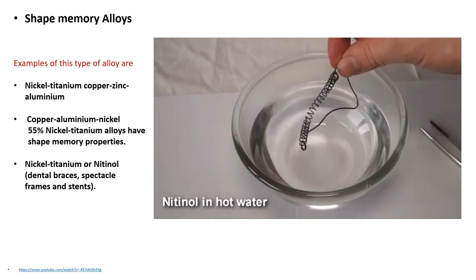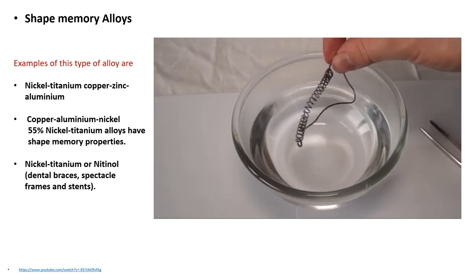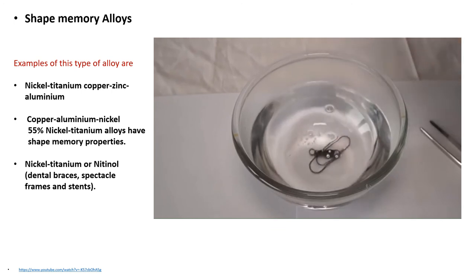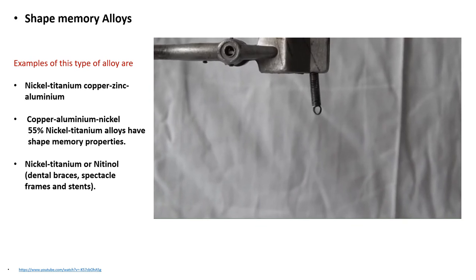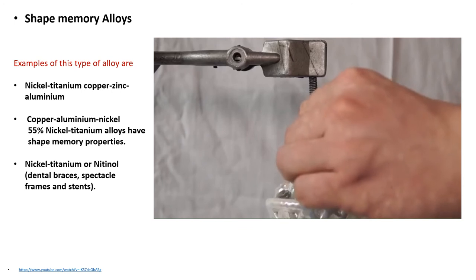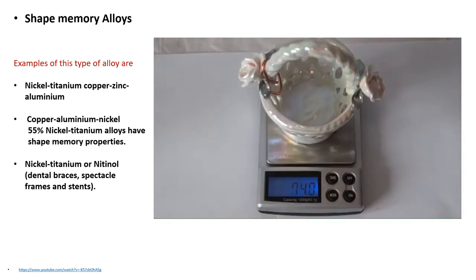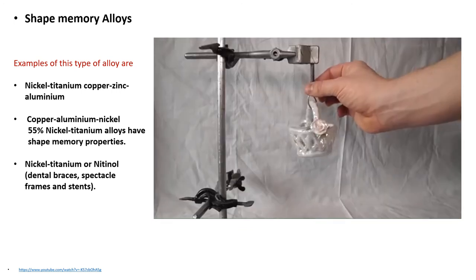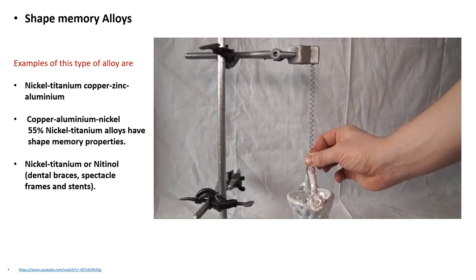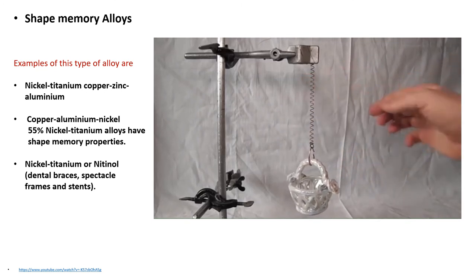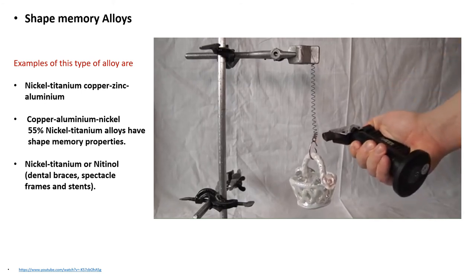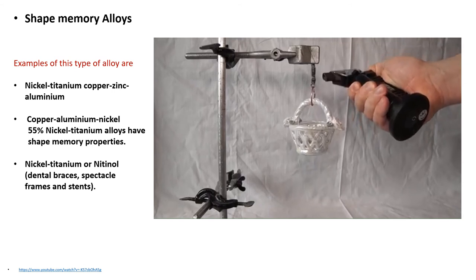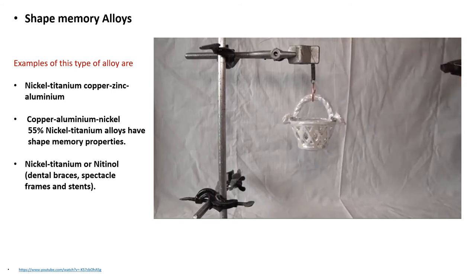While nitinol restores the shape, it can also do some work. Let's see what kind of work a small spring of nitinol can make. I have attached the spring to a tripod and hung a porcelain basket onto it, which weighs 180 grams. Next, we stretch the spring. For the spring to be tightened again, I'll heat it with a lighter. Let's proceed. As you can see, the spring has lifted the basket quite easily.